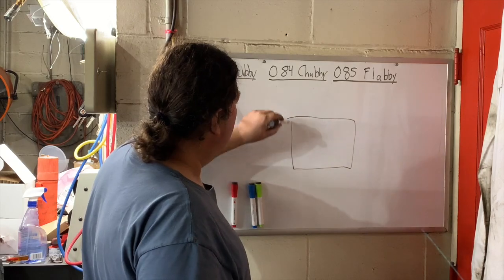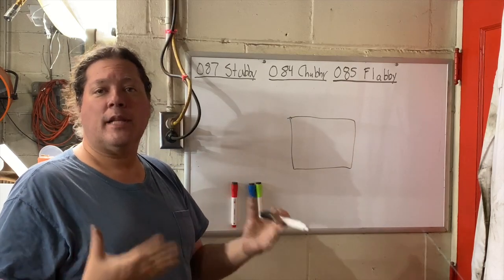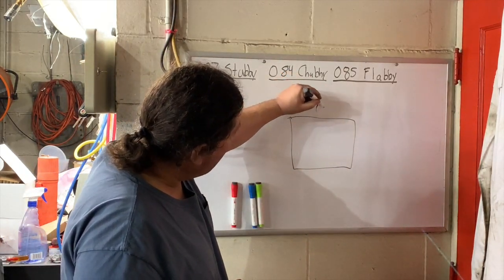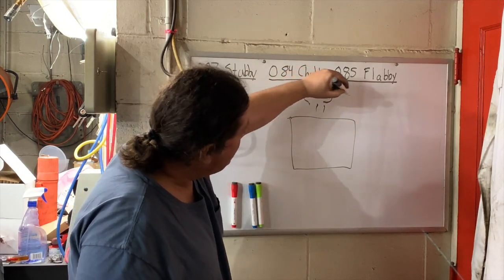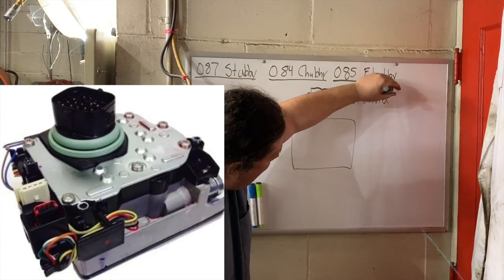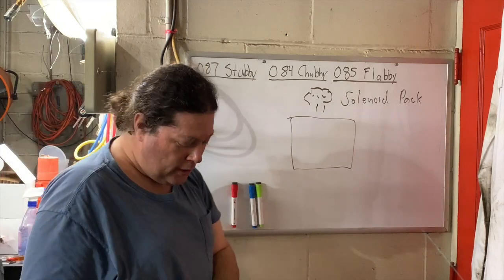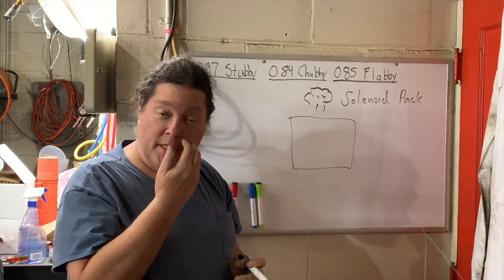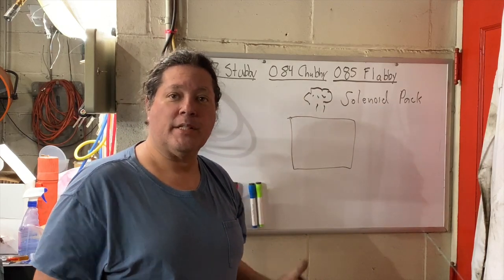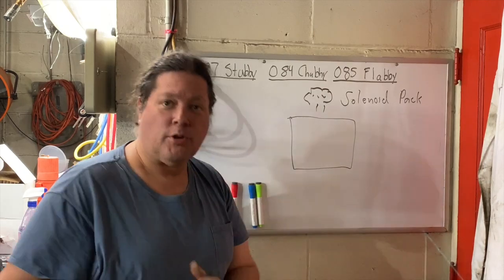The first is a thing which looks like a brain, called the solenoid pack. What does it do? It actually does almost everything that the transmission does, and it's one of the main sources of why this transmission is such a problem for people, because problems with the solenoid pack get misdiagnosed as a transmission rebuild.